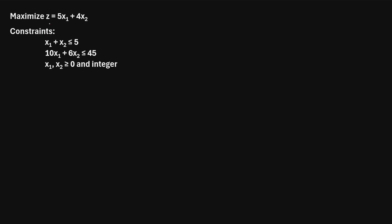Let's say we want to maximize the function z equals 5x1 plus 4x2, subject to the following constraints: x1 plus x2 has to be less than or equal to 5, and 10x1 plus 6x2 has to be less than or equal to 45. x1 and x2 both have to be greater than or equal to 0, and x1 and x2 have to be integers.